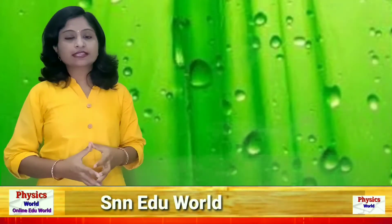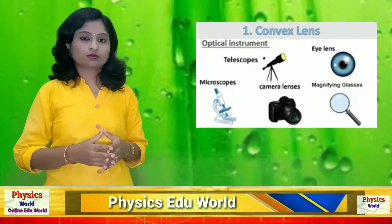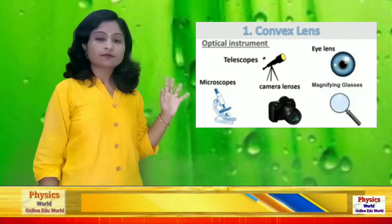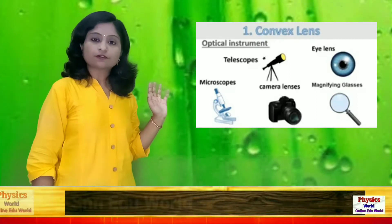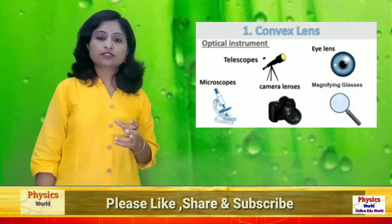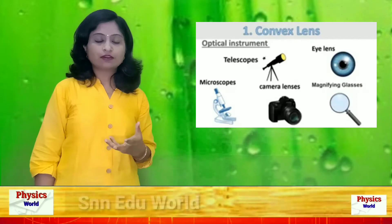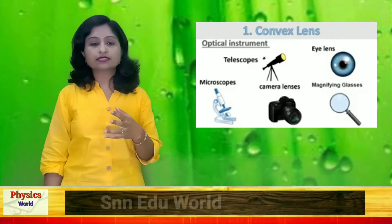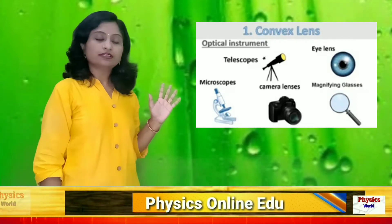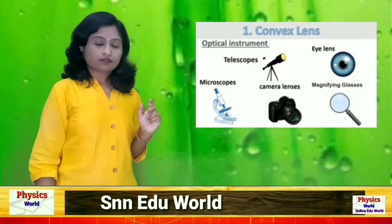Now, where can the convex lens be used? Some examples of convex lenses include the telescope. A telescope is a device used to see distant objects. There are two types — one for nearby areas and one for far areas such as the sky or terrestrial objects. In the telescope, we use convex lenses.